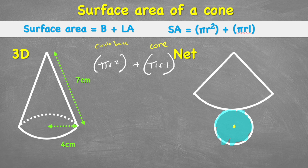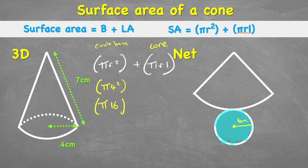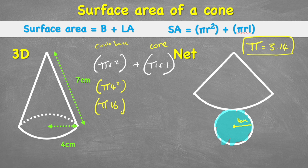The radius is 4 centimeters, so this part of the formula would be pi times 4 squared. Working that out, 4 squared is 16, so I'd have pi times 16. I can either use the pi button on my calculator or the abbreviated version, 3.14. Using the calculator, pi times 16 gives me 50.27. So the area of this circle is 50.27 centimeters squared.